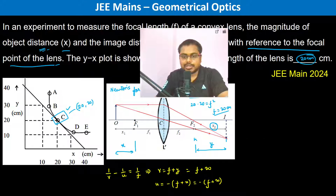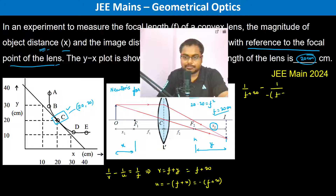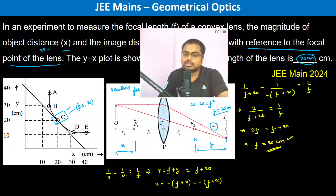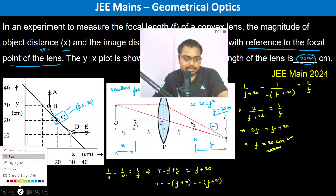Substituting into the lens formula: 1/(f + 20) minus 1/(-(f + 20)) equals 1/f. This simplifies to 2/(f + 20) equals 1/f, so 2f equals f plus 20, giving f equals 20 centimeters. Both methods give the same result.